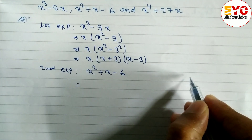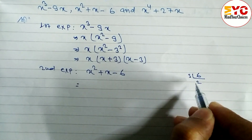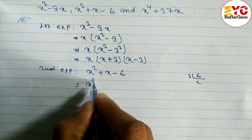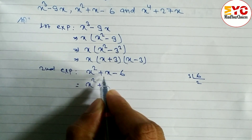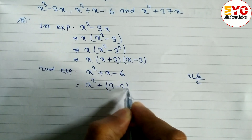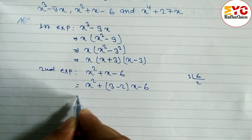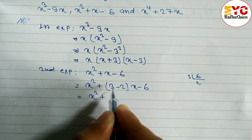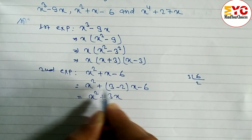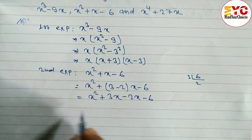We know that three into two is six, and three minus two is one. So we can write here x square plus, and in the place of one x we write three minus two, giving us x square plus three x minus two x minus six.